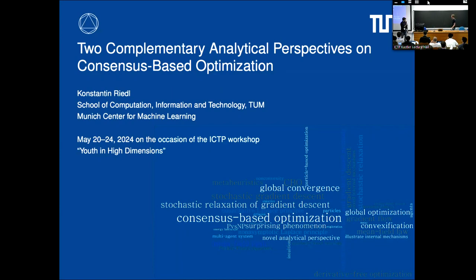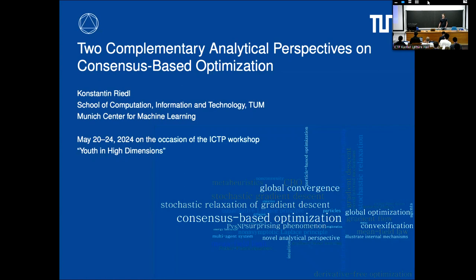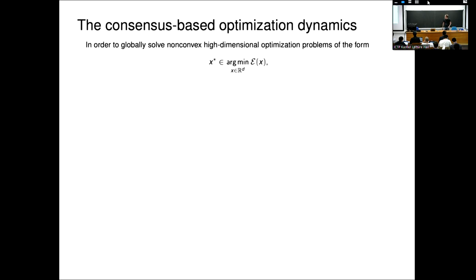Last contributed talk now by Konstantin Riedl from TU München. My talk is a bit more theoretical than the ones before, but I'll focus longer on slides with pictures giving intuition. I plan to give you intuition about consensus-based optimization, introduced around 2017, which is an algorithm to optimize non-convex functions. We want to find the global minimizer of a non-convex objective function, denoted by calligraphic E, by employing particles that explore this function and try to find a consensus about the global minimizer.